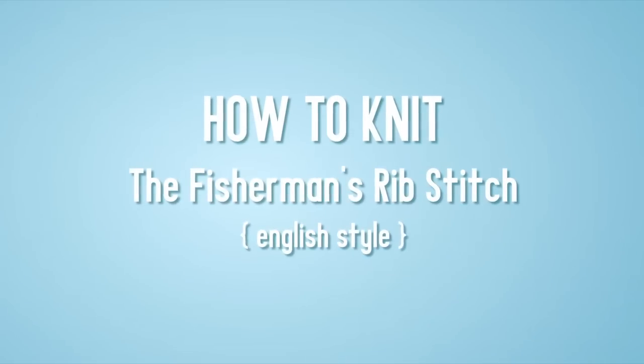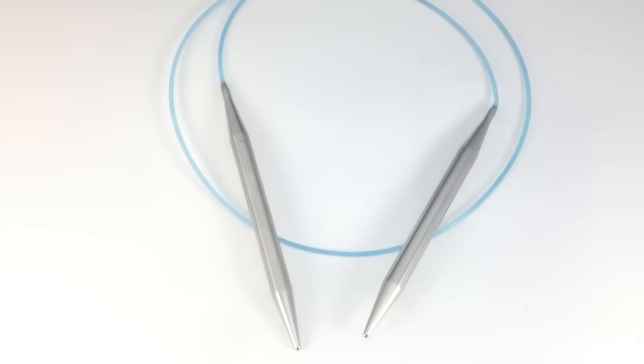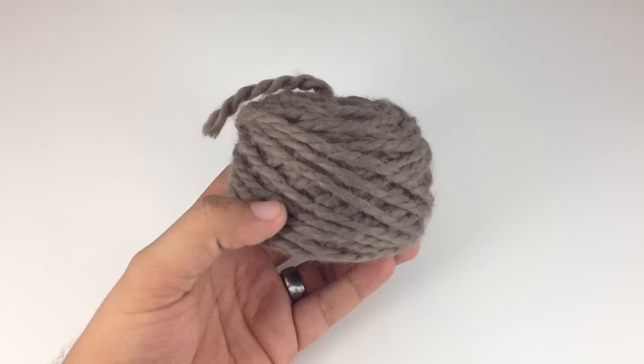How to knit the fisherman's rib stitch English style. Special thanks to our sponsors Cassell for providing today's needles. Today we are using their Addi Turbo circular needles in size US 13.